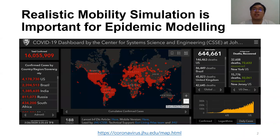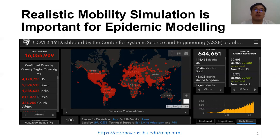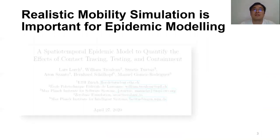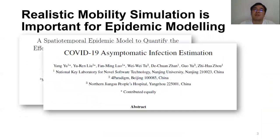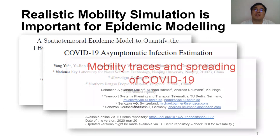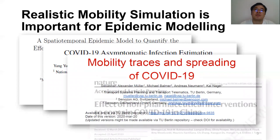Due to the outbreak of COVID-19 around the world since January 2020, spreading modeling becomes an emergent topic for health organizations and national governments. They need predictive models to support public health policymaking. To accurately model the diffusion of COVID-19, the mobility trajectory of population becomes a fundamental component because it determines the strength and speed of spreading to a large extent. The massive amount of mobility data generated every day via smartphone is a good resource for this modeling.